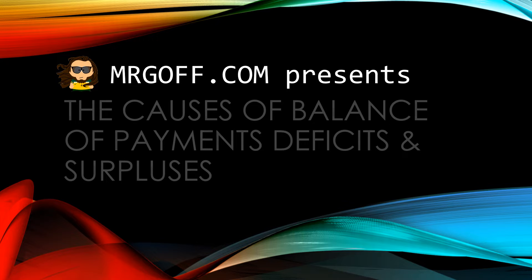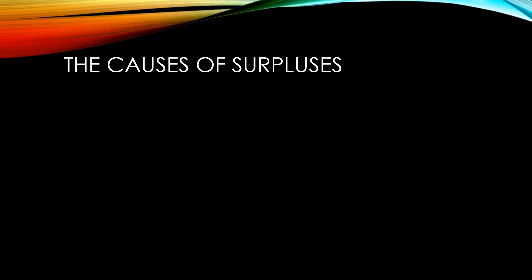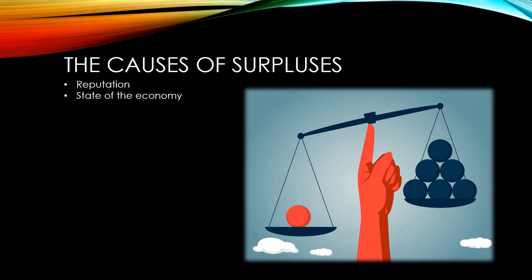Hello and welcome to another GCSE Economics video with me Mr Goff from MrGoff.com. This video will focus on the causes of balance of payments on current account deficits and surpluses. There are several factors that might cause a surplus on the balance of payments on current account. These include reputation, the state of the economy, a falling exchange rate, and net inflows from investment. We'll take a look at each of these in more detail now.